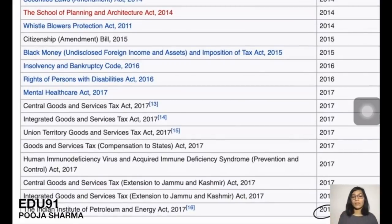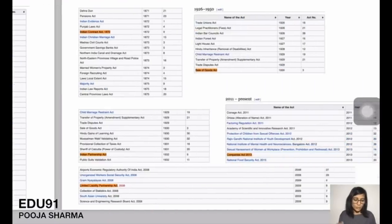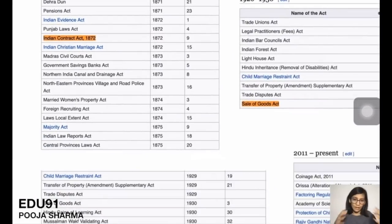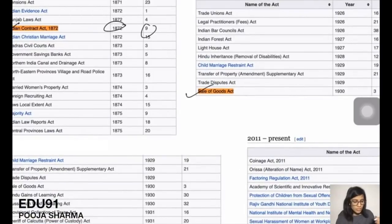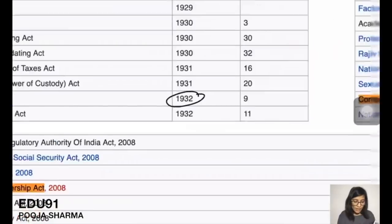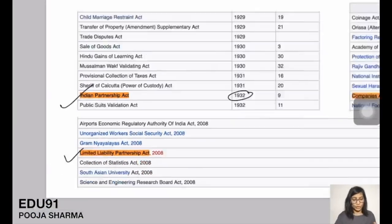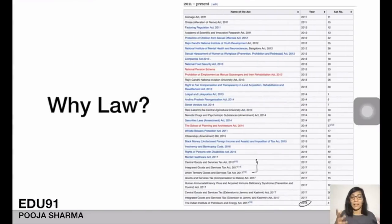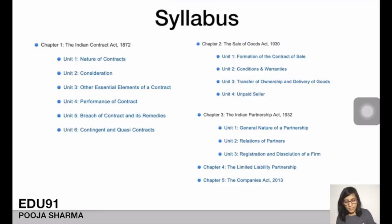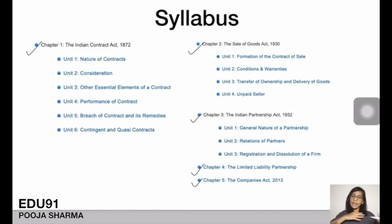Every year new laws keep coming. The latest laws include the Indian Institute of Petroleum and Energy Act and GST. For our CA Foundation syllabus, we will study: Indian Contract Act 1872, Sale of Goods Act 1930, Indian Partnership Act 1932, Limited Liability Partnership Act 2008, and Companies Act 2013. That's five chapters.